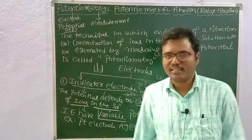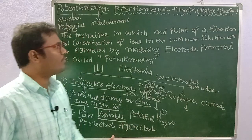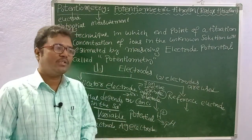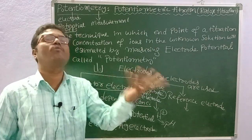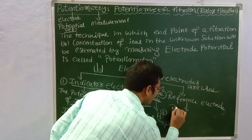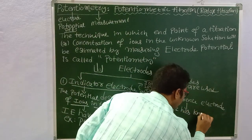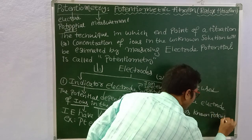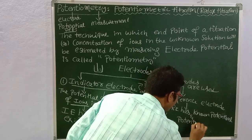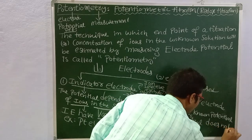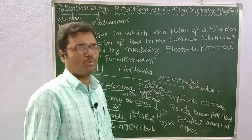The second electrode is the reference electrode, which has the opposite property. The reference electrode's potential does not depend upon the concentration of ions present in the unknown solution. That means the reference electrode has a fixed or known electrode potential that does not alter.